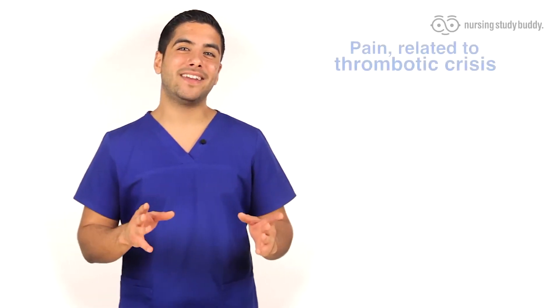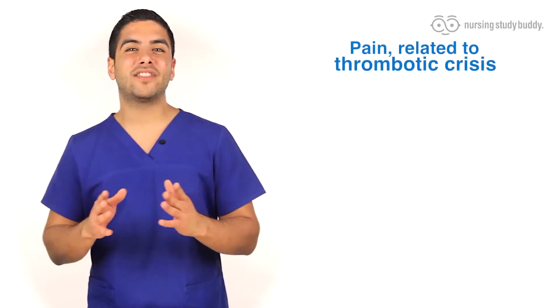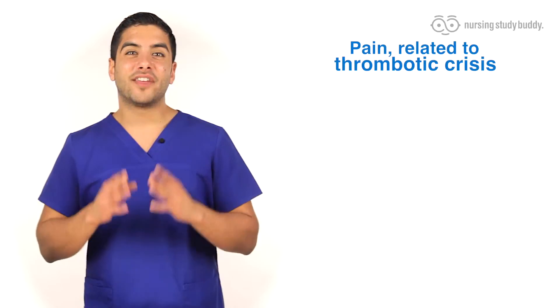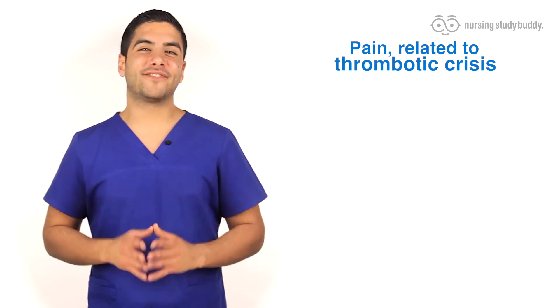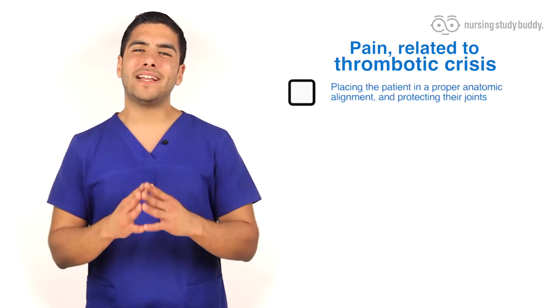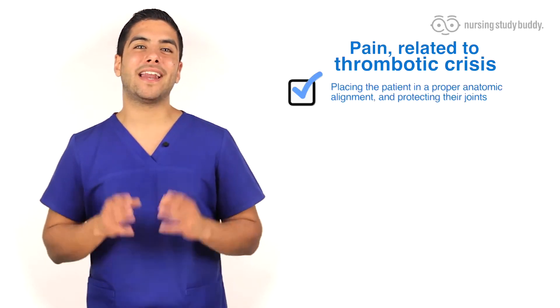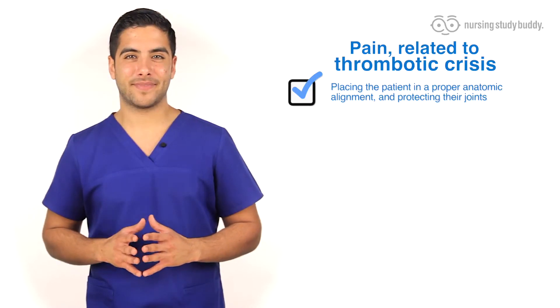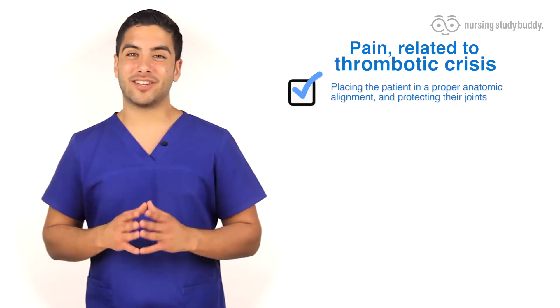The first nursing diagnosis that we're going to be discussing is pain related to thrombotic crisis. The nursing interventions for this diagnosis include placing the patient in proper anatomic alignment and protecting their joints.